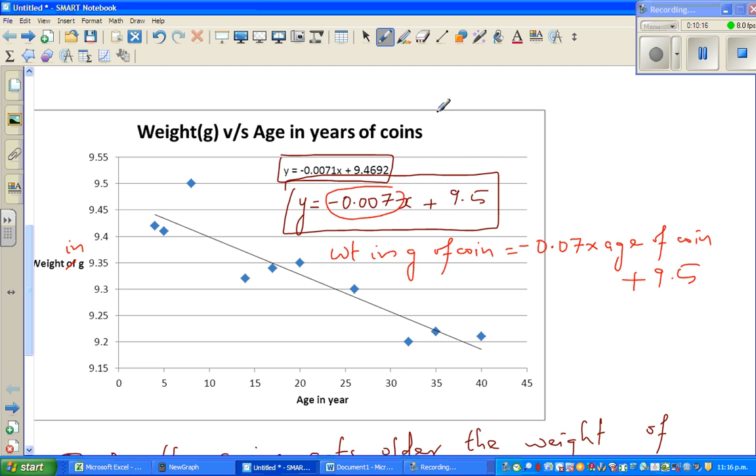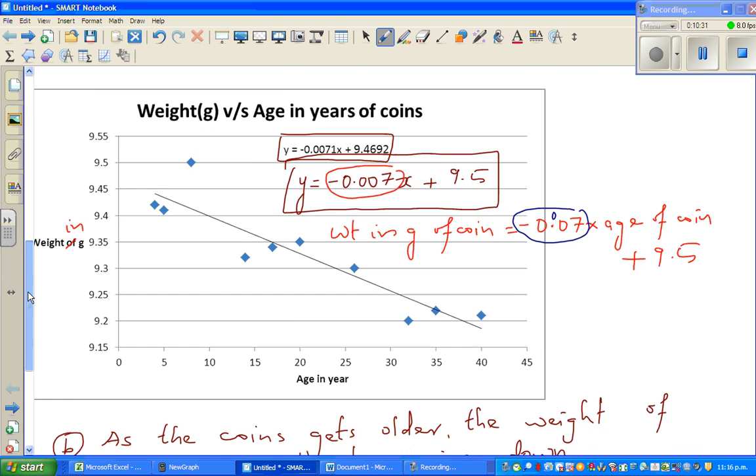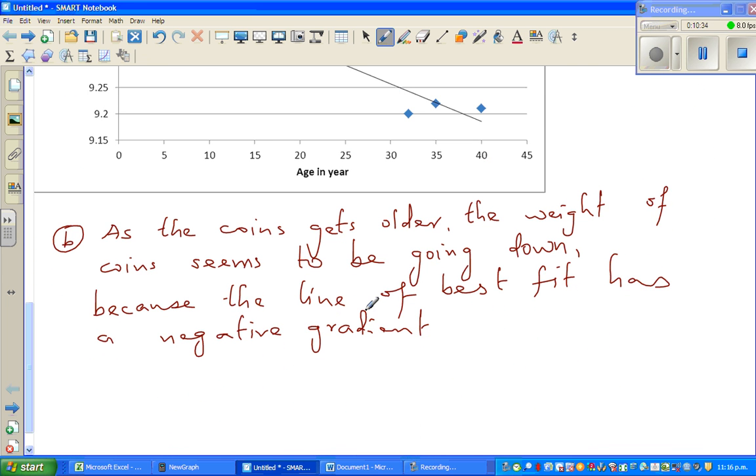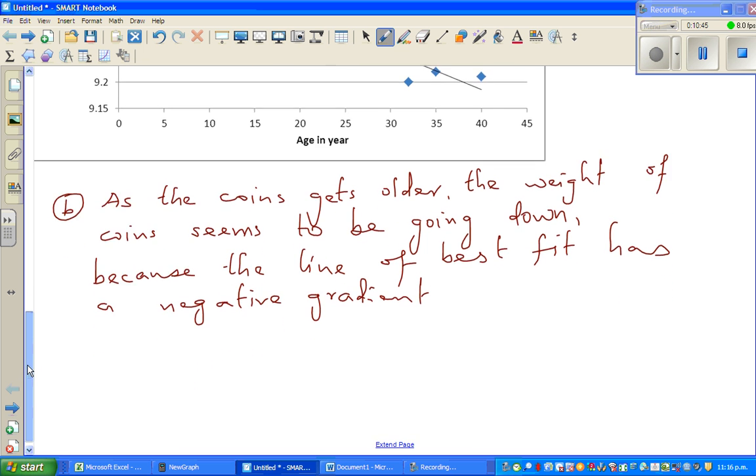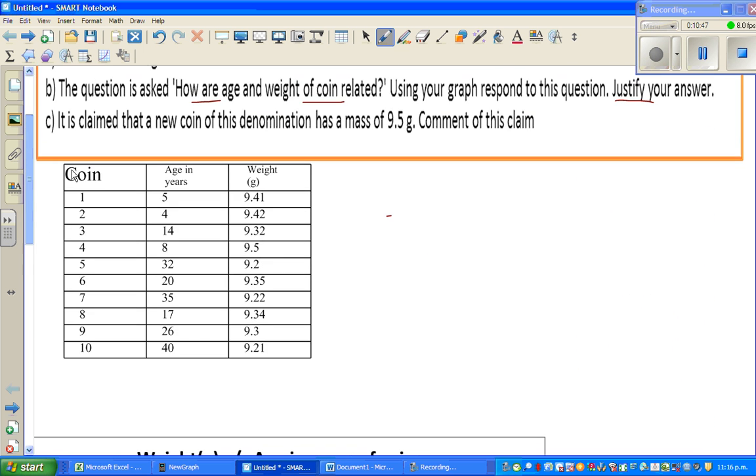That is the negative gradient is indicating that as the coin gets older, the weight of the coin is going down, it's becoming lighter and lighter because of use probably.